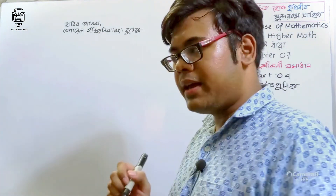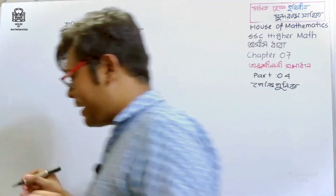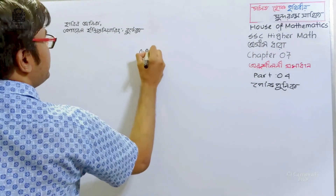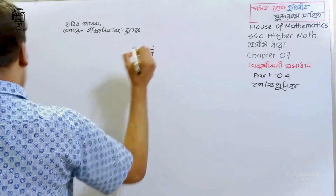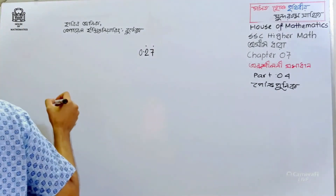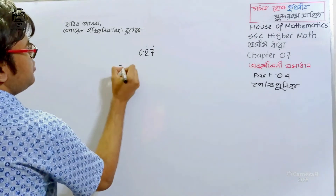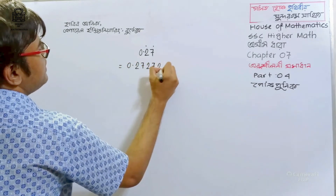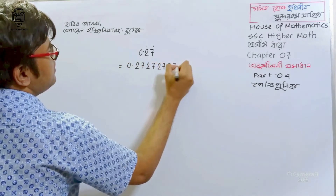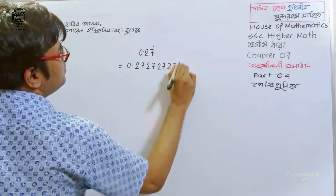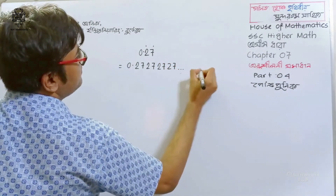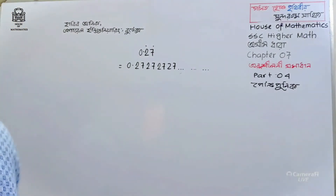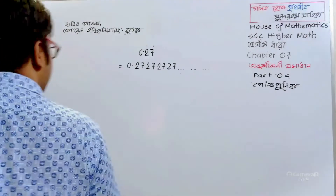So we are going to be interested in one thing. First question: we are going to look at 0.275, or is it 0.272727? All right. This means we are going to be looking at 0.272727. This is right.